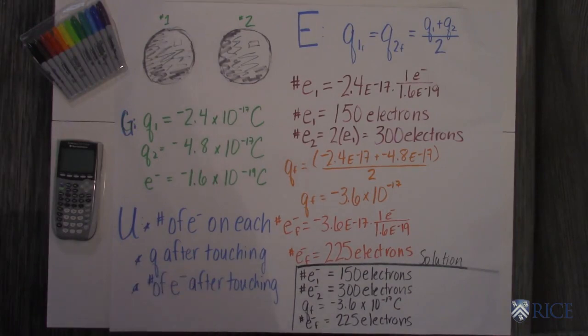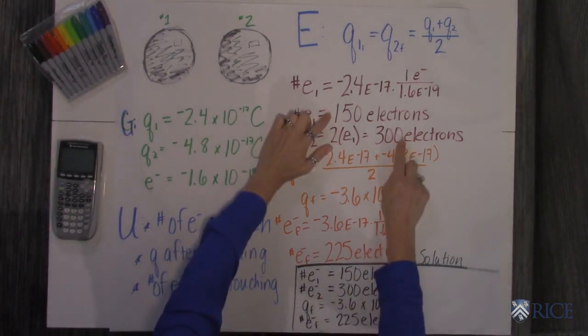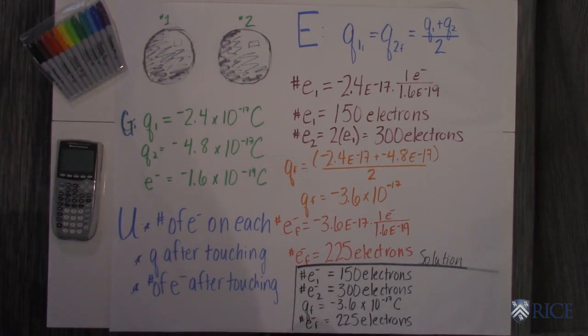You do the same thing to figure out the number of electrons. If you know one has 150 and the other has 300, you can just average them. So the final number of electrons on each sphere is 225.